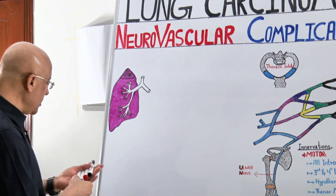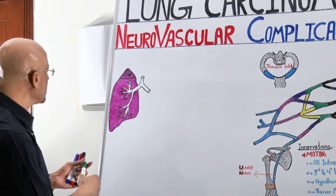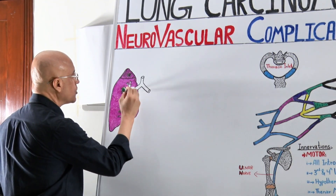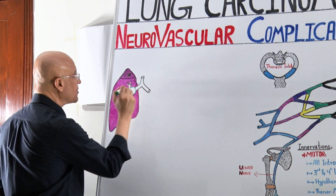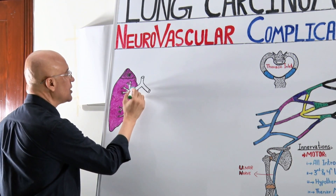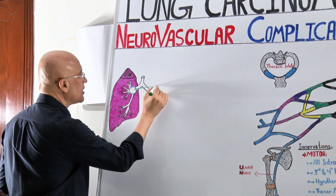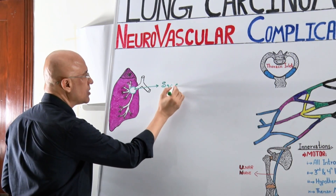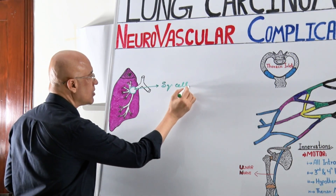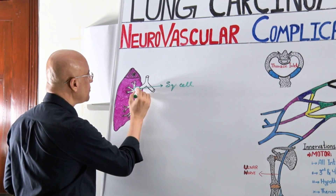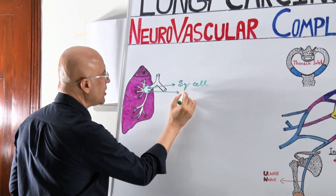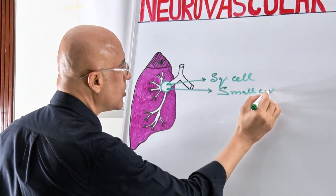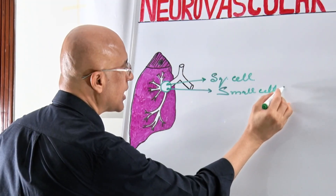Other lung cancers — for example, we talk about cancers which take origin here; we call them central lung cancers. Most commonly, histologically, they are squamous cell carcinomas or they are small cell carcinomas.